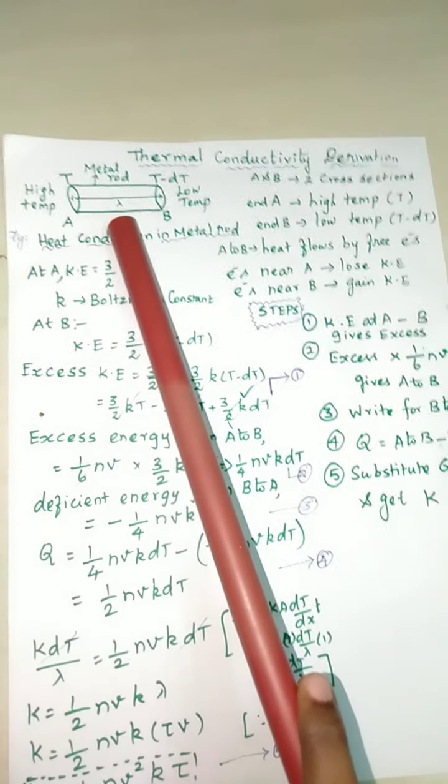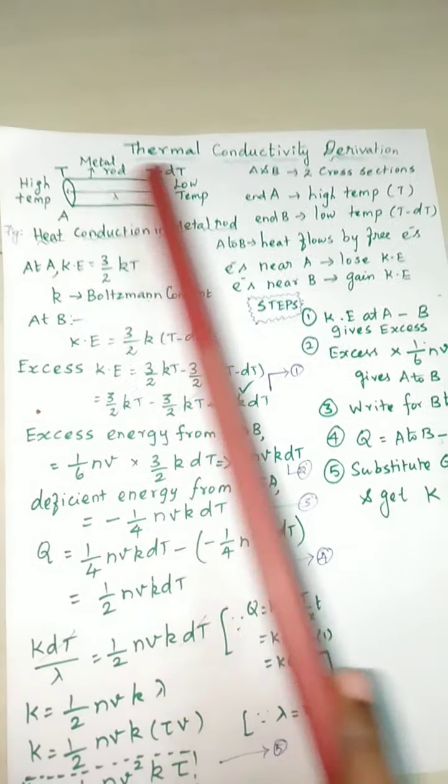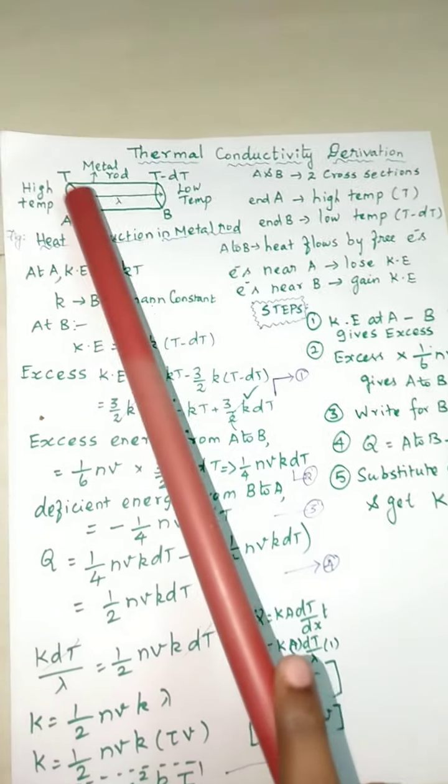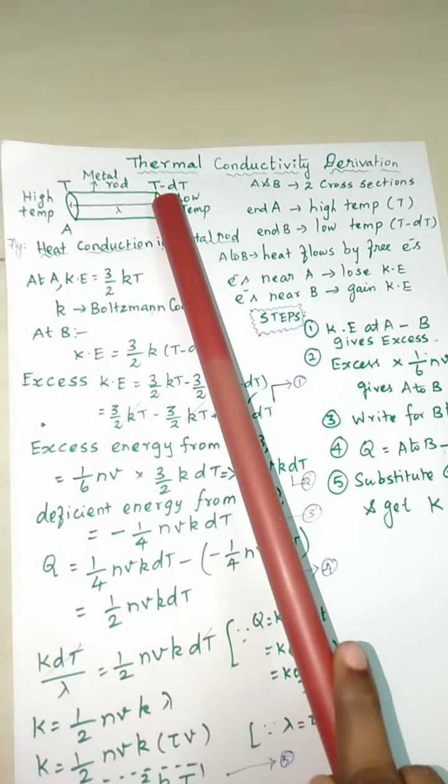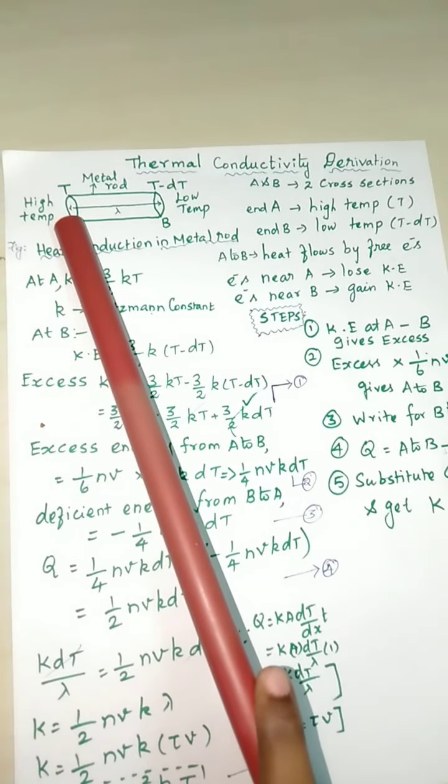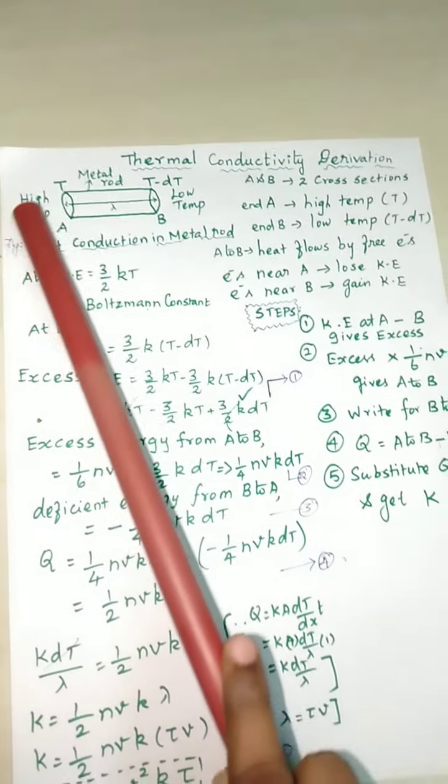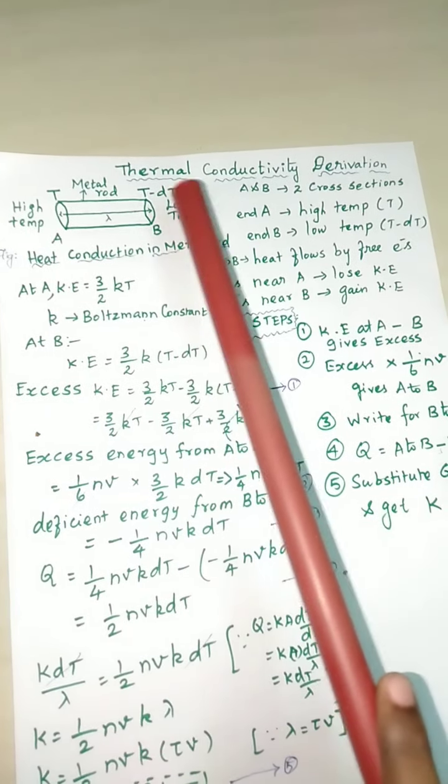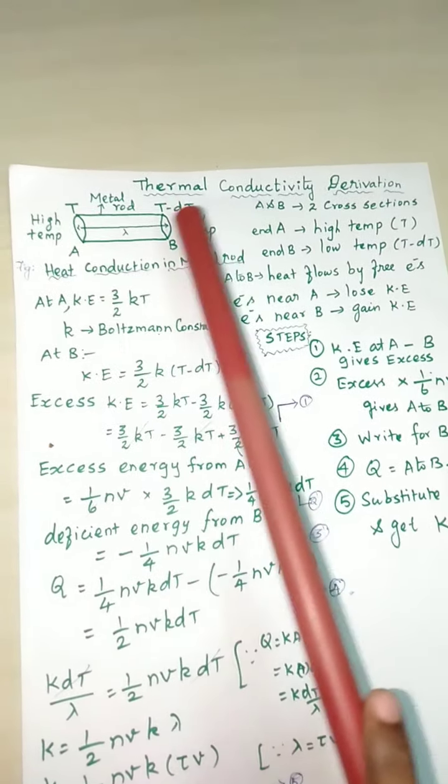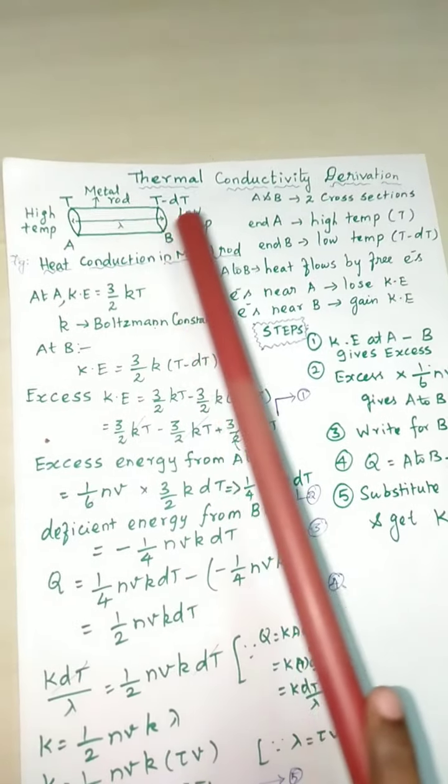This diagram is the metal rod. One end of the rod is A, another end of the rod is B. Its temperature is T. The end B temperature is T minus DT. This end A is in the field of high temperature and end B is in the low temperature field.